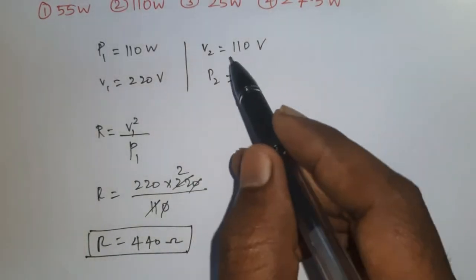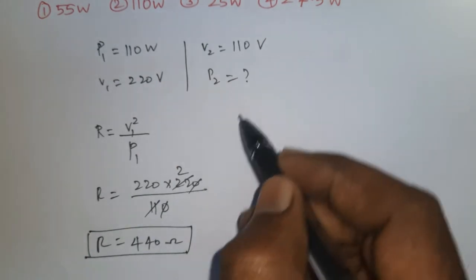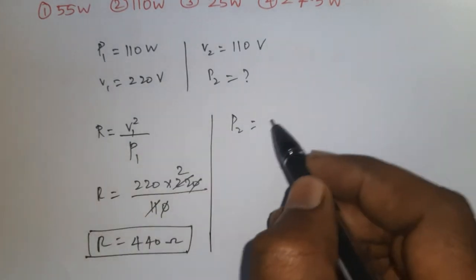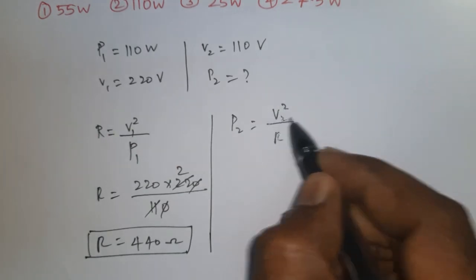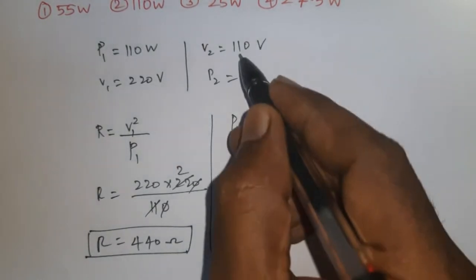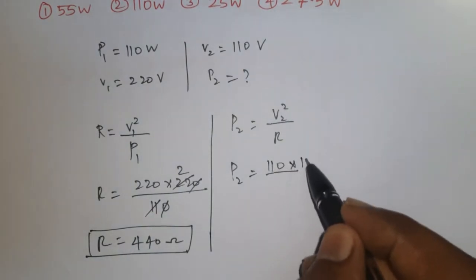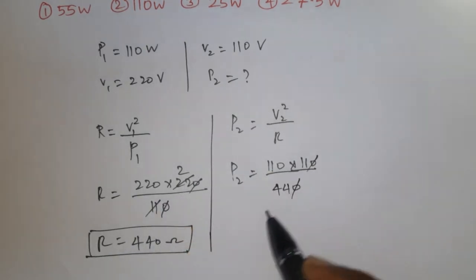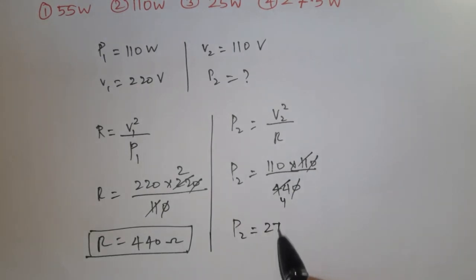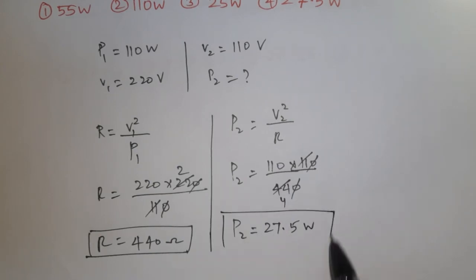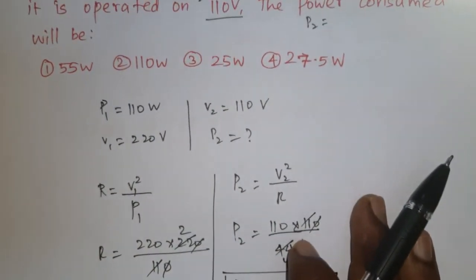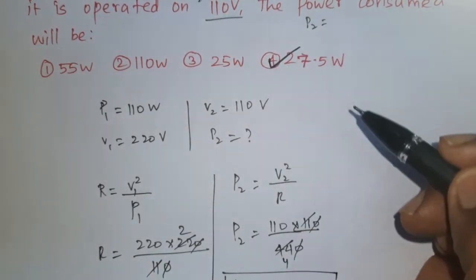Now using the same bulb at 110 V: P2 = V2²/R = (110)² / 440 = 12100/440 = 27.5 W. This is the power consumed by the bulb when operated at 110 V. The correct option is the fourth one: 27.5 watt.